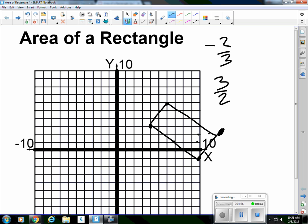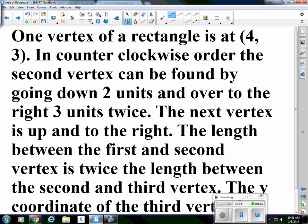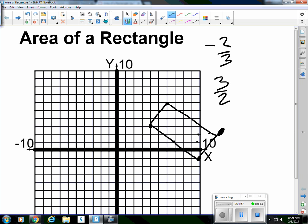To find the area of that thing, well actually the question on this one is just find the... So we know that the first and second vertex, the distance between those, the length, is twice the length between the second and third. So I went down two and over three, down two and over three. And I know that this one is only half of that length. And so I'm only going to go up three and over two once. So the length will be half of what the other side is.